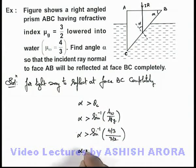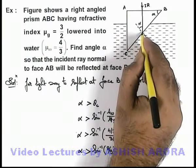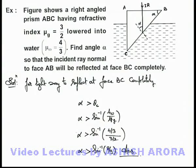On simplifying, the value of alpha should be more than sine inverse of 8/9. If the value of angle alpha is more than sine inverse 8/9, the light ray will completely reflect on the surface BC and suffer total internal reflection.